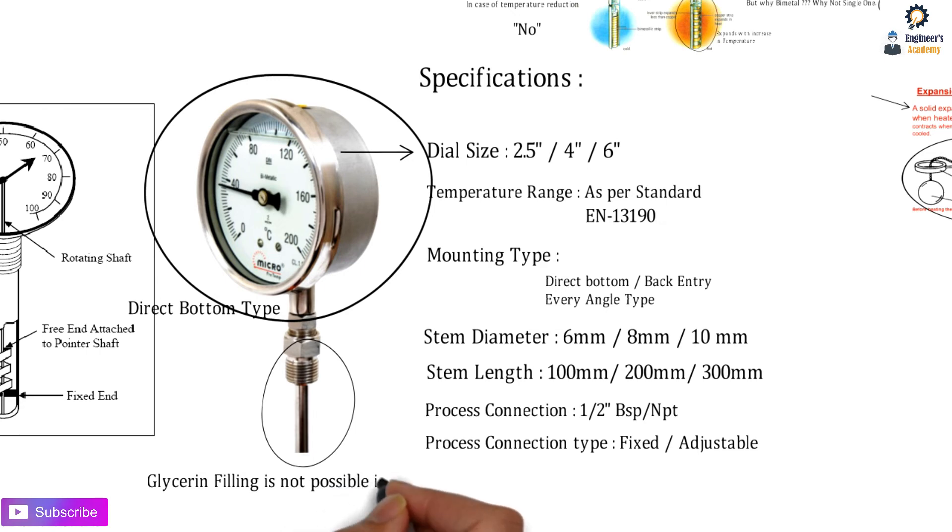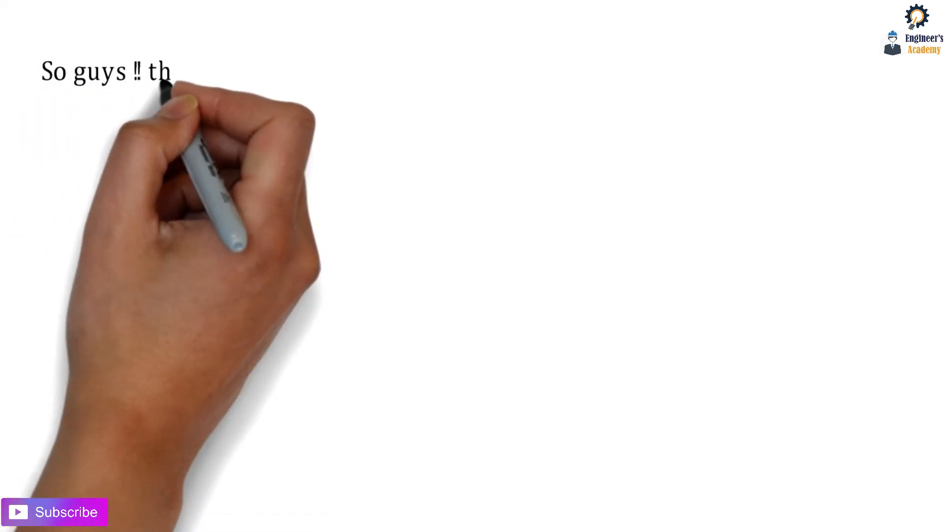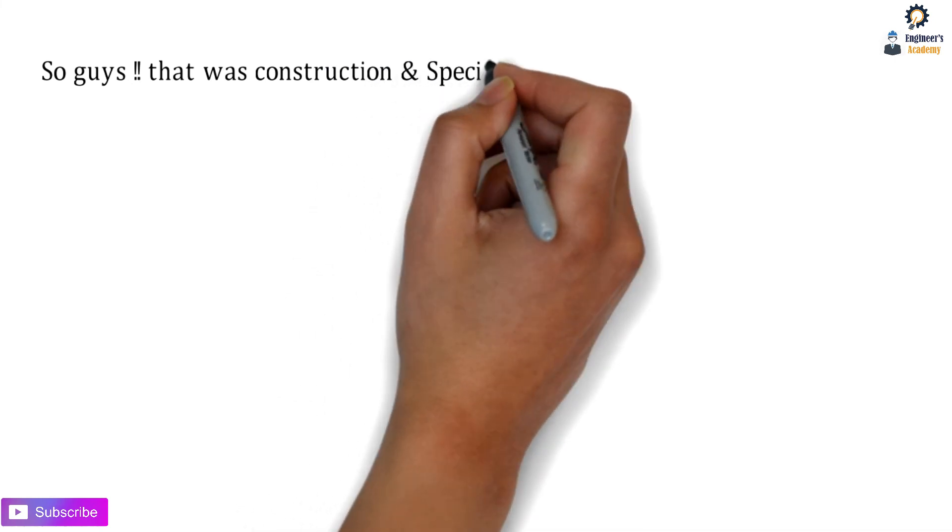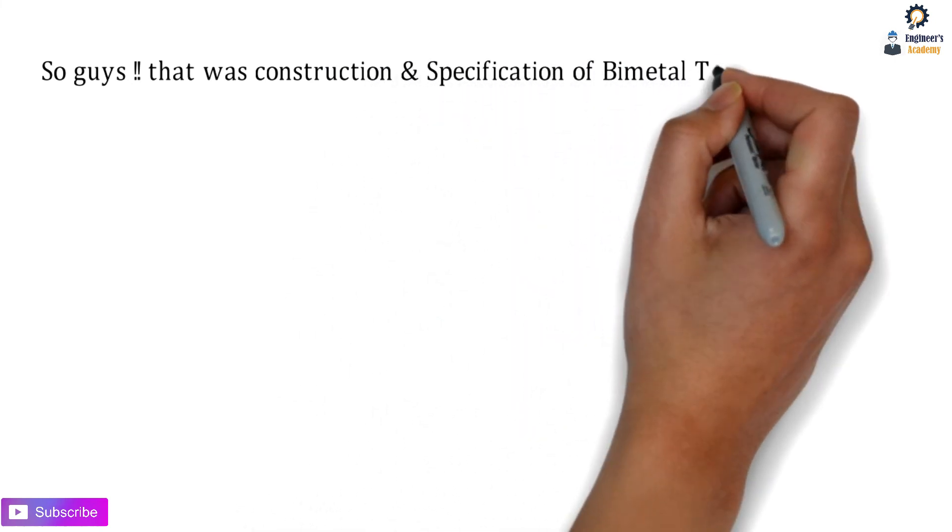Glycerine filling is not possible in case of bimetallic temperature gauges. In this video, we've seen the construction and specifications of the bimetallic temperature gauge.